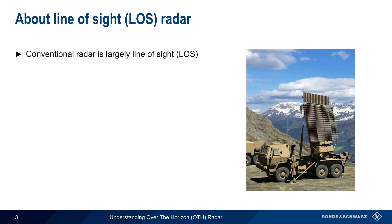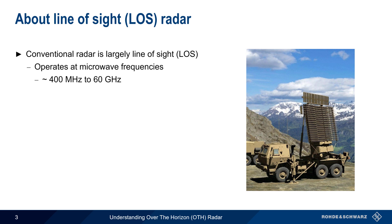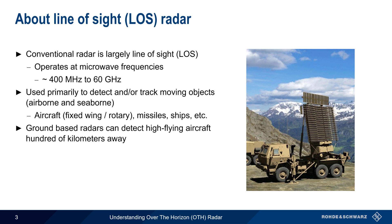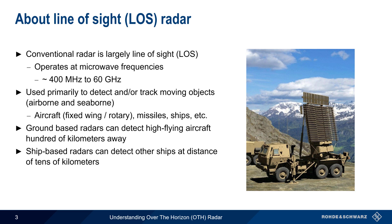Let's start by reviewing traditional line-of-sight radar. These are radars which operate at so-called microwave frequencies, roughly in the range of about 400 MHz to about 60 GHz. Radar is most often used to scan for and track moving objects through the air or on bodies of water, such as fixed and rotary-wing aircraft, various types of missiles, and ships. Most ground-based radars can detect high-flying aircraft at distances up to several hundred kilometers, and ship-to-ship radars have detection ranges on the order of tens of kilometers.